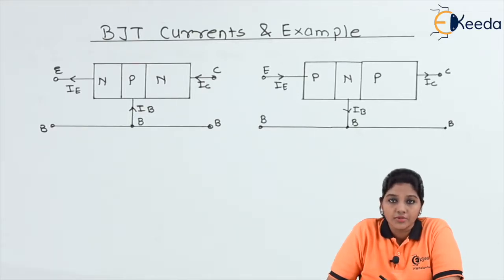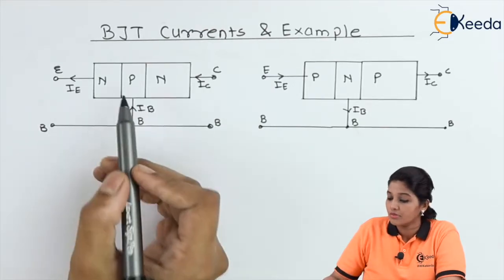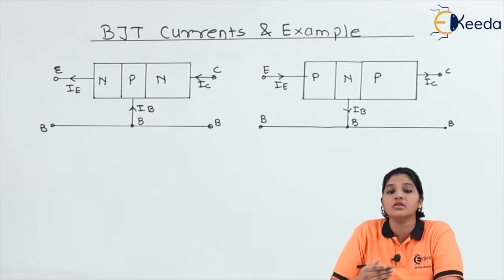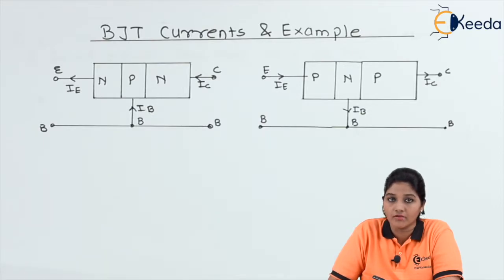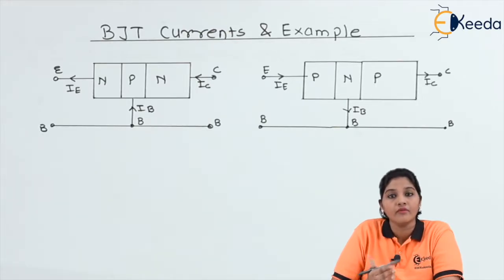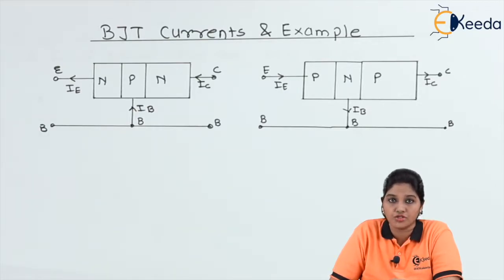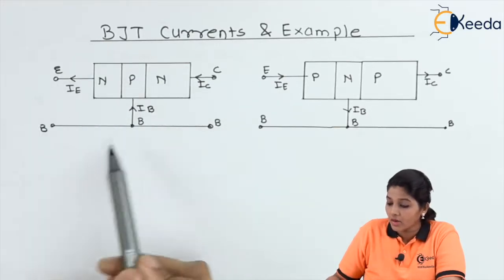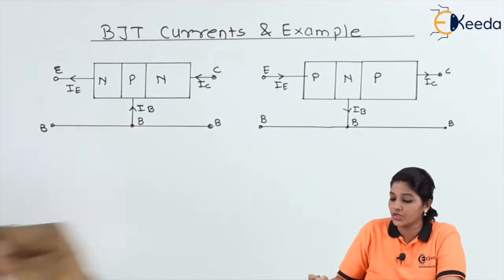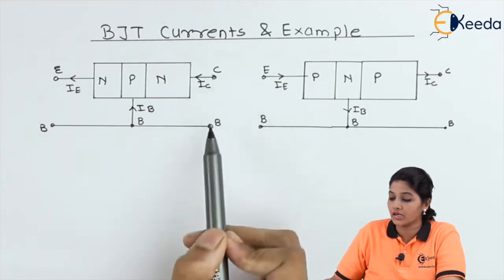First we consider the NPN transistor. In case of NPN transistor, the P region is sandwiched between two N regions and the base terminal is considered as the common terminal. We know that a transistor is a three terminal device, but when we want to use it in any circuit, we require four terminals — two for input and two for output. Therefore, out of the three terminals, one terminal is required to be the common terminal. In this diagram, base is considered as the common terminal, so the input is applied between emitter and base and output is obtained from collector and base.